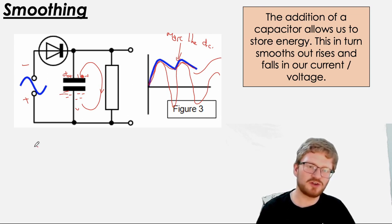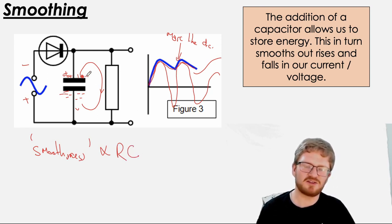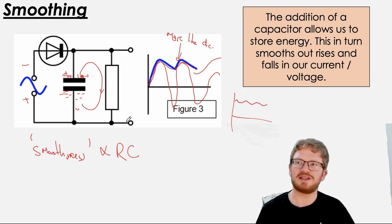If you look at other examples, you have to do all sorts of calculations about how smooth this will be. But for CIE, you just need to know that a capacitor in parallel with your load or your device, that will always give you smoother ripples. It's useful to know, although it's not explicitly examined, the smoothness is proportional to the resistance of your load multiplied by the capacitance of this capacitor. So if you wanted to make this even smoother, then having a bigger resistance and a bigger capacitor will make that happen.